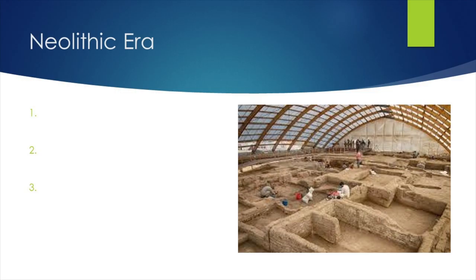Farming began as humans started picking plants that were abundant and provided energy that helped humanity survive and thrive — plants such as wheat, barley, rice, and other things like that. Through this process, they slowly began to domesticate the plants so that they weren't just growing wild. They were able to plant and cultivate them at very specific times. This is known as systematic agriculture.